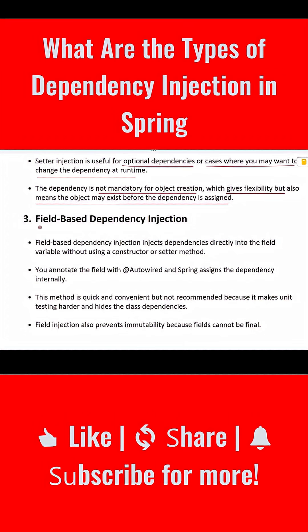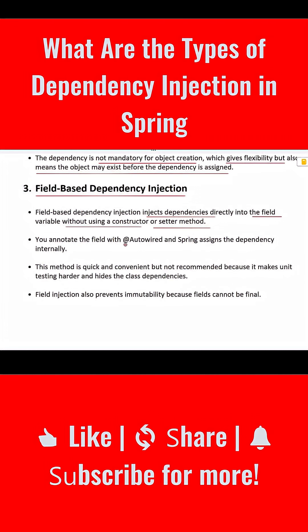The third one is field-based dependency injection. In this approach, Spring injects dependencies directly into the field variable without using a constructor or setter method. You simply annotate the field with @Autowired and Spring assigns the dependency internally. This method is quick and convenient but is not recommended because it makes unit testing harder and hides the class dependencies.